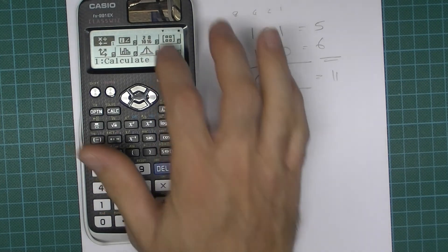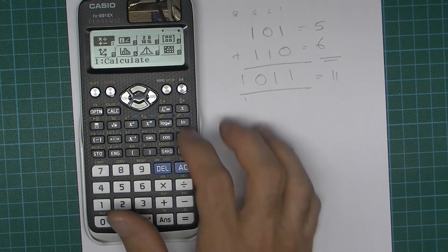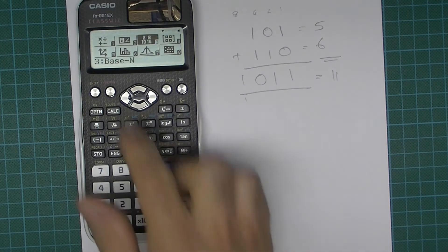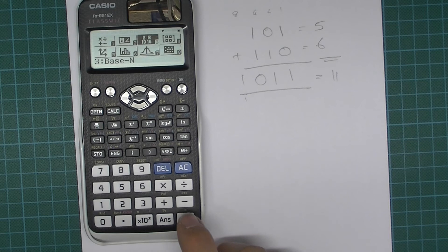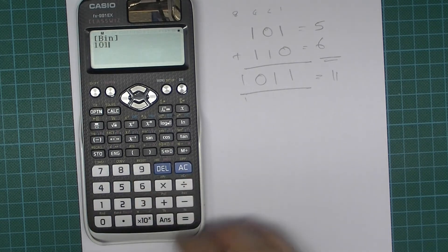Now to do simple calculations like that, go to menu, let's go into the base mode, I suppose you call it base mode, yeah base n mode. And so we're now in decimal and let's just change to binary and I can then do 1, 0, 1 plus...